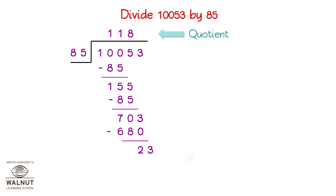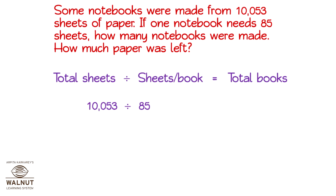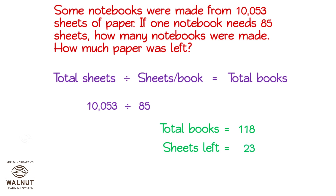The quotient is the number of books that were made. The remainder is the sheets left over. So, the books made were 118, which is the quotient. The sheets left are 23, which is the remainder. Let us try one more.